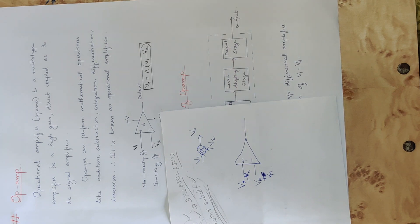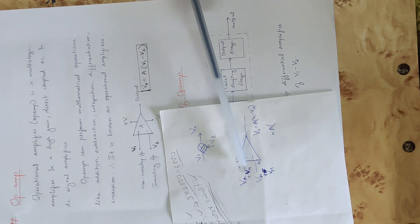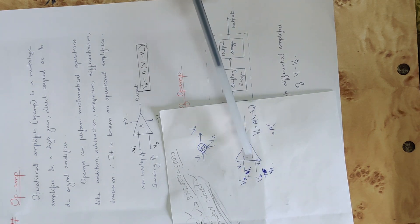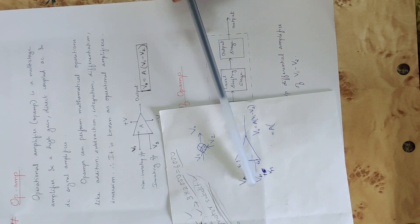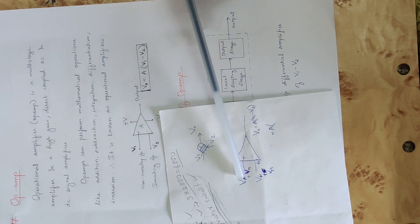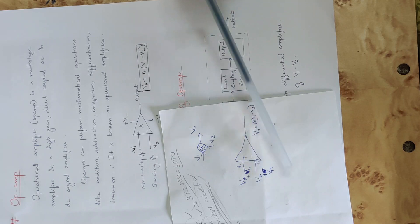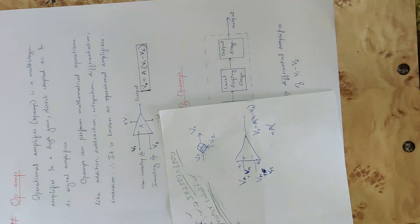The output voltage equation: VO equals A into V1 minus V2, where V1 is the positive terminal voltage and V2 is the minus terminal voltage. Now substituting V1 and V2: V1 is VA plus VN and V2 is VB plus VN.